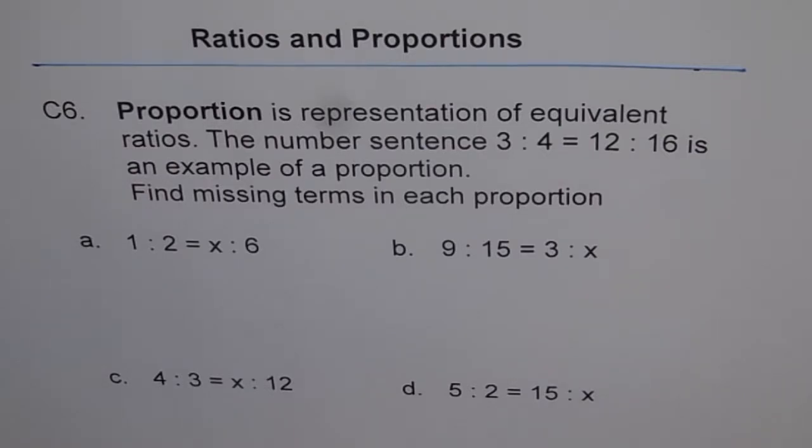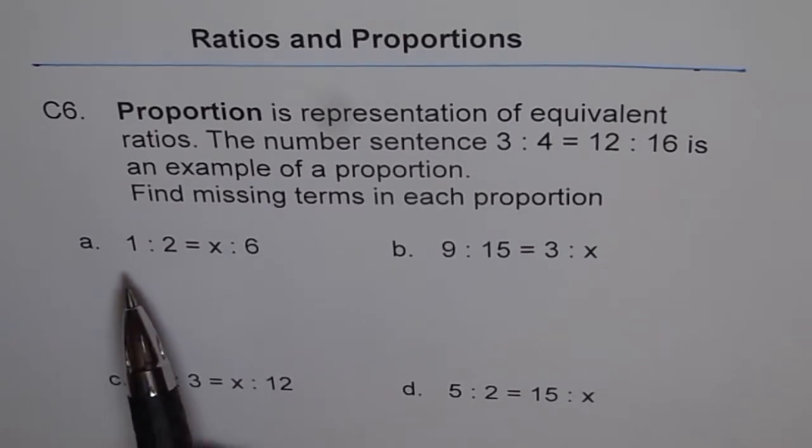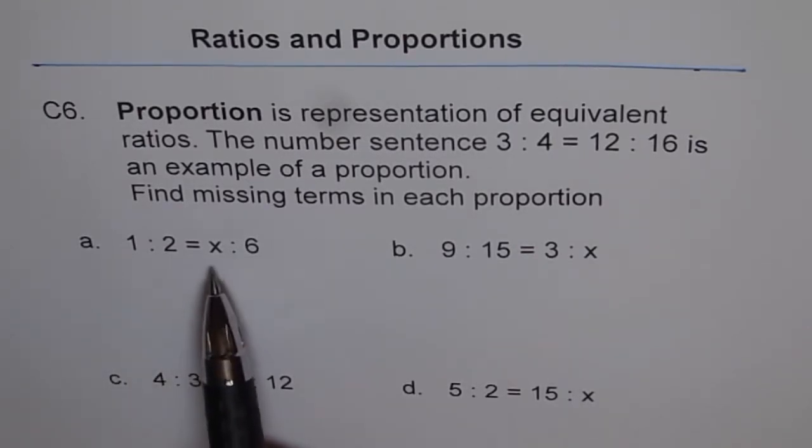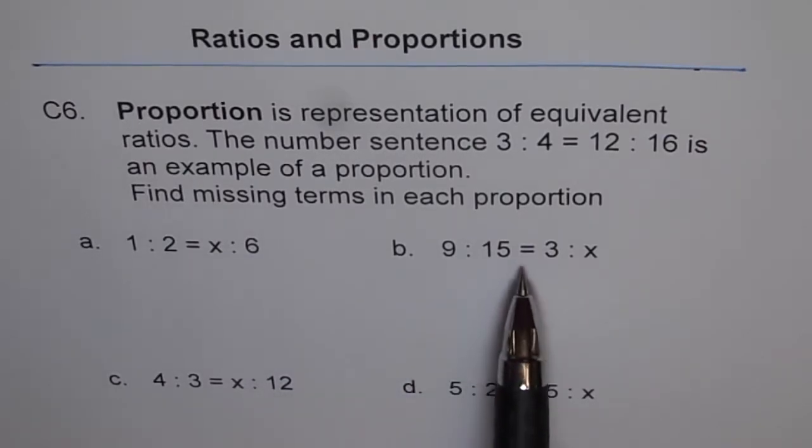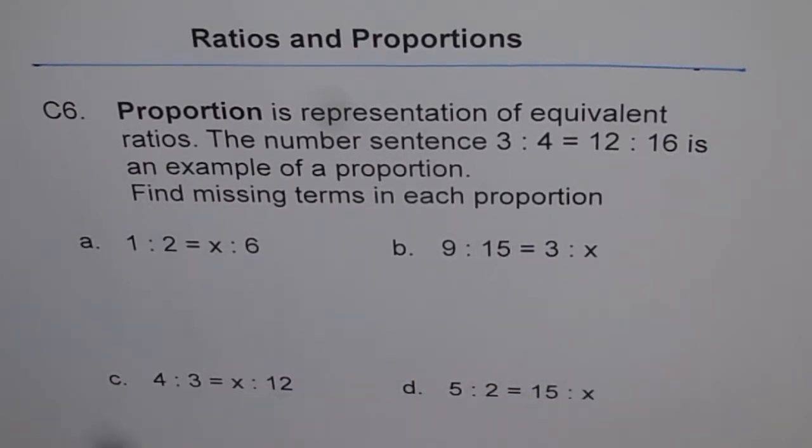Find missing terms in each proportion. The terms are 1 is to 2 equals to x is to 6, then B is 9 is to 15 equals to 3 is to x, C is 4 is to 3 equals to x is to 12, and D is 5 is to 2 equals to 15 is to x.